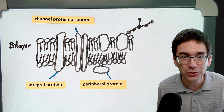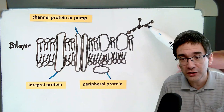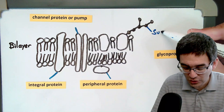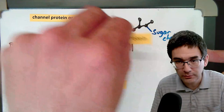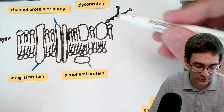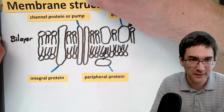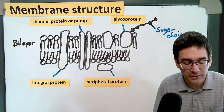Proteins that have a sugar chain are referred to as glycoproteins. The sugar chain is labeled here, and the glycoprotein is labeled over here. So that is basically the drawing of a membrane.